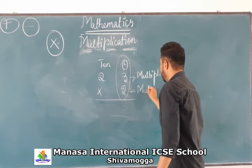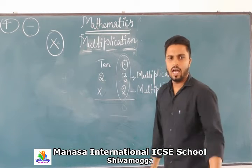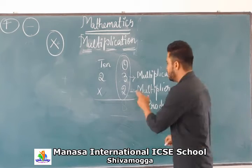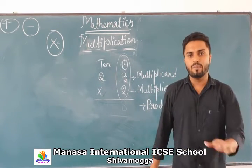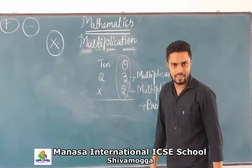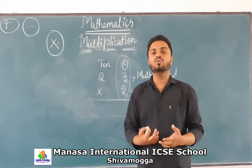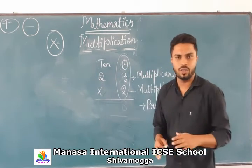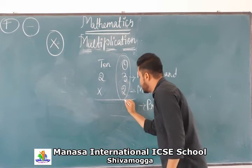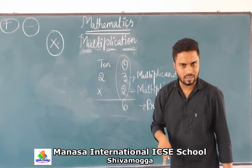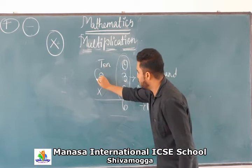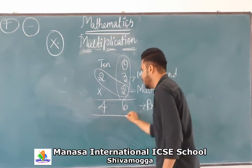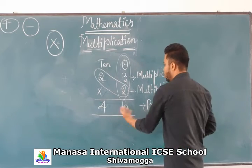And this is called the multiplier. The answer you get here is called the product. In multiplication, children, you have to know the tables very perfectly — the tables from 2 to 20 or from 2 to 15. So we will start multiplying: 2 threes are 6. We multiply with the one's place — 2 threes are 6. Next, we multiply with the ten's place: 2 twos are 4. This is the answer, and that answer is called the product.